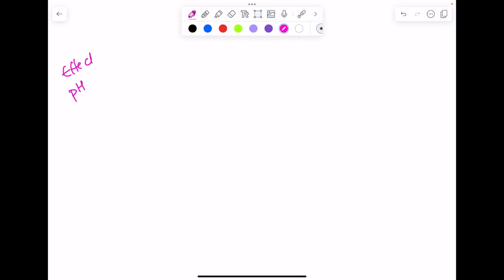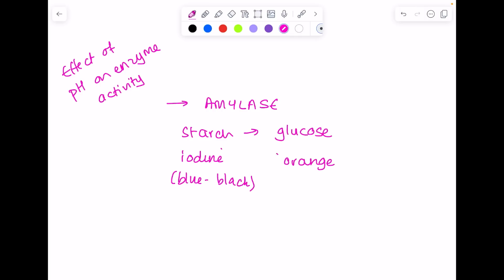Let's talk about the effect of pH on enzyme activity. They like to ask you about amylase here. For this experiment, just think that it breaks down starch into glucose. You can monitor this reaction by looking at iodine, which will be blue-black in the presence of starch and orange in the presence of glucose.